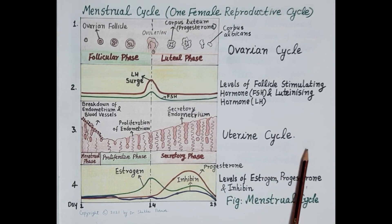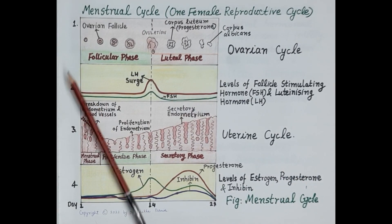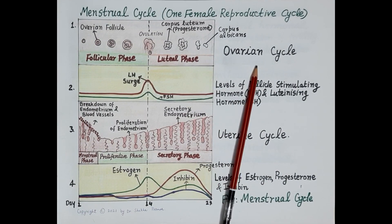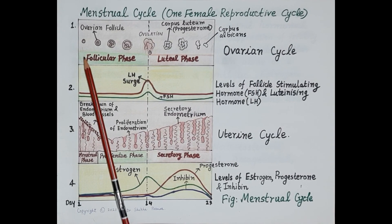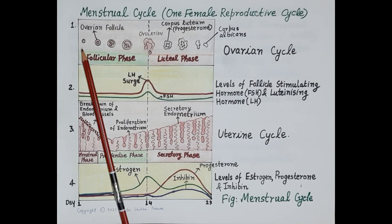This chart explains the menstrual cycle with four figures. Let's first understand the ovarian cycle. At puberty, lacks of immature ovarian or Graafian follicles are present in the ovaries containing immature eggs. On average, only one ovarian or Graafian follicle develops each month, and this follicle is called the dominant follicle.